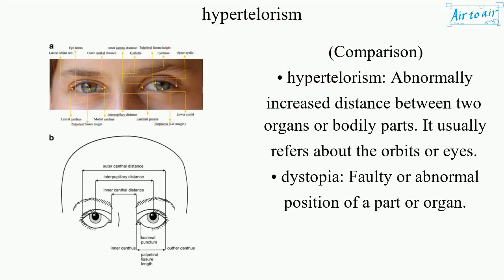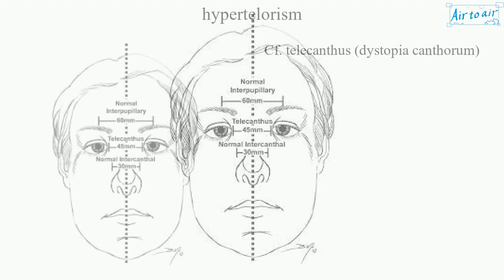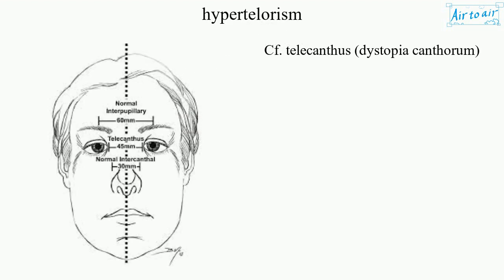Comparison: Hypertelorism refers to an abnormally increased distance between two organs or bodily parts, and usually refers to the orbits or eyes. Dystopia refers to a faulty or abnormal position of a part or organ. Telecanthus, also known as dystopia canthorum, is a related but distinct condition.